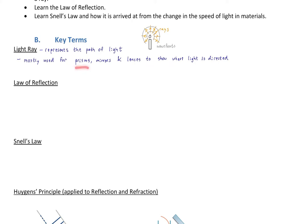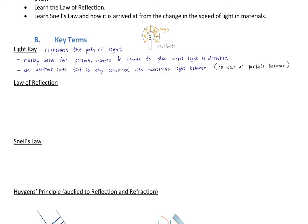The light ray is mostly used for prisms, mirrors, and lenses to show where light is directed. It's an abstract idea — there's not really any such thing as a light ray; it's only concerned with macroscopic light behavior. Rays definitely ignore the wave behavior and the particle behavior. We already know what can happen with waves in terms of interference patterns, and we'll see more about particles in later lectures.